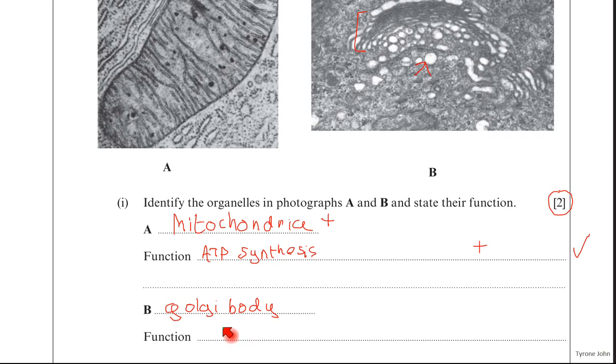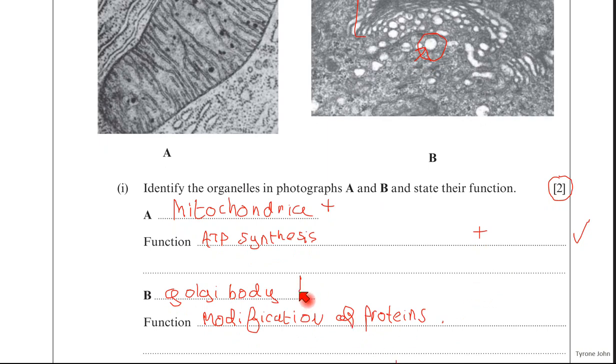The function of this. You could have put modification of proteins. You could have put the addition of sugars to the proteins. You could have said produce glycoproteins. They would have also allowed production of secretory vesicles which are these structures as I said earlier in the diagram. And they would have allowed synthesis or production of lysosomes. So I'll put modification of proteins. So if you got those two answers right, you'd have had a plus and a plus, and then a tick somewhere to give you the mark.